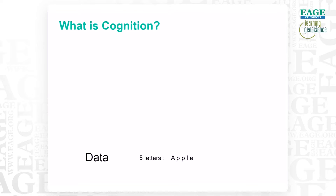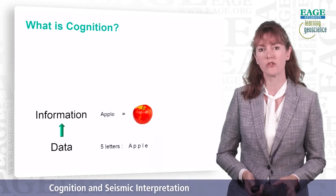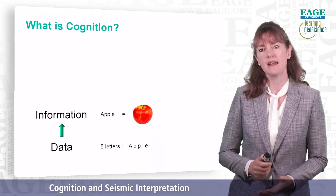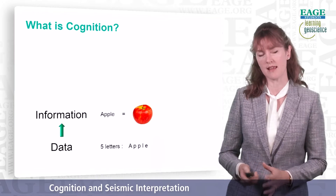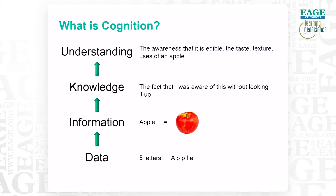Here's a practical example. We have some data — five letters of the English alphabet. That's just data, but it contains information, because the word 'apple' — those five letters in that order — represents a particular object, a piece of fruit. The fact that I know the word apple represents this piece of fruit is knowledge — something I remember without looking it up. And the understanding is my awareness that that piece of fruit is edible, that it has a taste and texture, and I know what I can do with an apple and what I can combine it with to make a really nice meal.